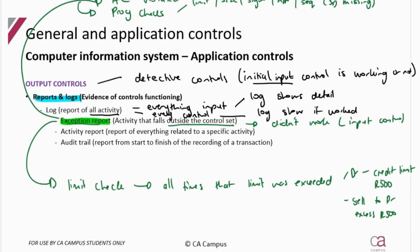Screen aids are a little different because getting an exception report for where a prompt didn't work is harder. But we can get exception reports for screen aids — for example, where a mandatory field was not completed even though there was an asterisk indicating it was mandatory, or where someone was able to add something that was not on the dropdown list. A prompt or screen format exception report may be more tricky to generate.